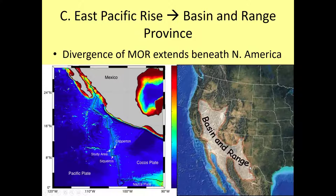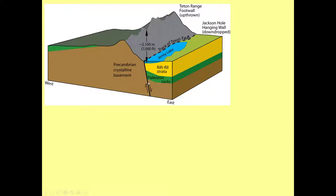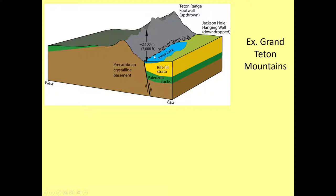With extensional stress, you tend to see normal faults where the hanging wall moves down, and also some structures like horsts and grabens. Here is a classic example of a normal fault — a simple fault trace where the hanging wall is dropping down and the footwall is rising up. In this case there is over 7,000 feet of offset where the Grand Teton Mountains are created. The upthrown block is the footwall and the down-dropped block is a region called Jackson Hole, which is culturally important in Wyoming. The rift valley fill is just erosion of the Teton Mountains falling down to fill in the dropped block.